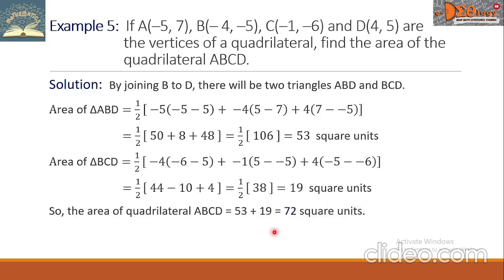Now for the area of the quadrilateral: 53 plus 19 equals 72 square units.